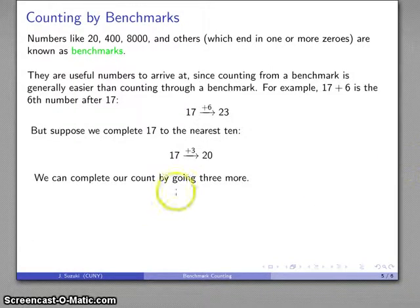It is easy to go from here to here because that's completing seventeen to the nearest ten. And then it's easy to go from the benchmark number twenty, three more, to twenty-three. And all together, I've gotten a total of three, and three, I've gotten a total of six to get to twenty-three.